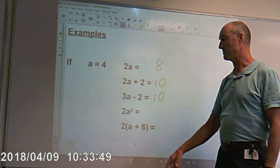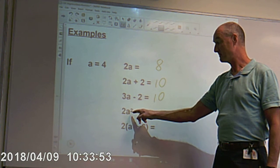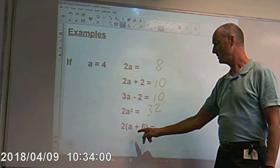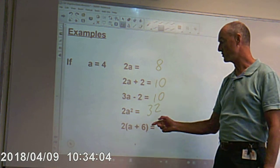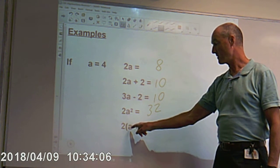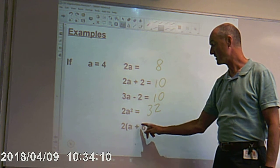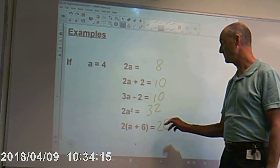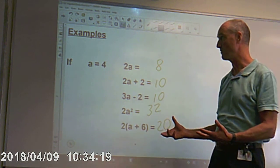What about 2a squared? If a is 4 — 4 squared, 4 times 4 is 16, 2 lots of 16 is 32. And then finally, we've got a bracket here — BIDMAS tells us we've got to do the brackets first. So, 4 plus 6 is 10, 2 times 10 gives us 20. That's what's meant by substitution.